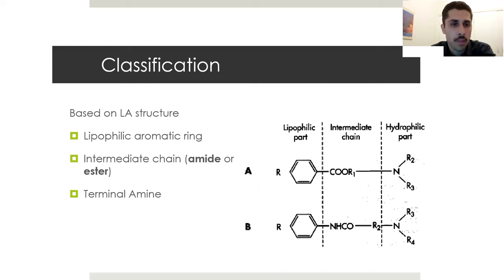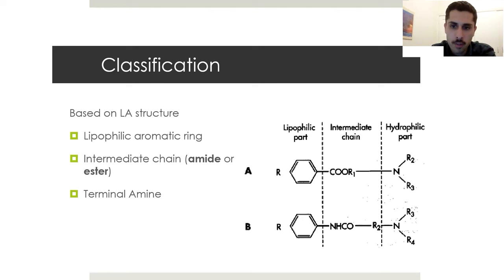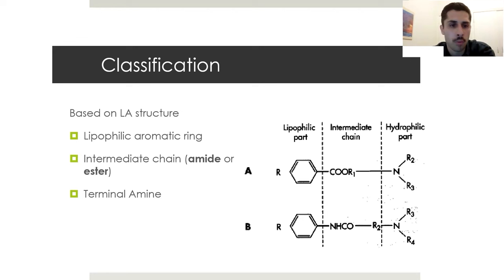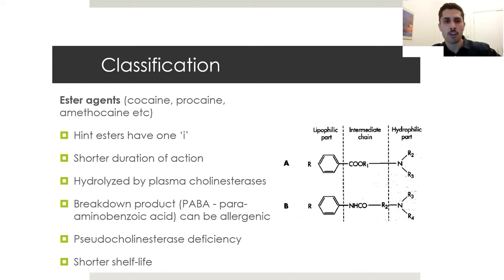LA agents are broadly classified by their intermediate chain. The general structure has a lipophilic aromatic ring on one end, an intermediate chain in the middle, and a hydrophilic part. The hydrophilic part, through hydrogenation, acts as the on/off switch - dictating whether the LA is in a lipid- or water-soluble form, which is important for diffusing through the cell membrane. Based on this intermediate chain, LAs are classified as amides or esters. Esters are older agents; amides are newer and more commonly used today.